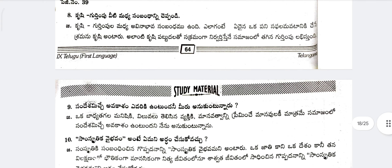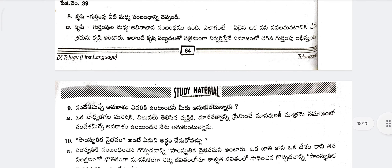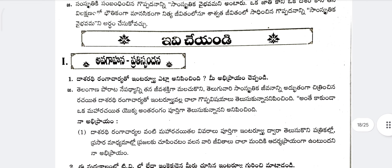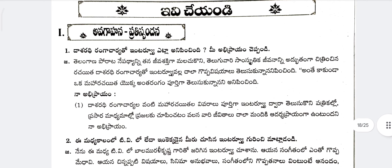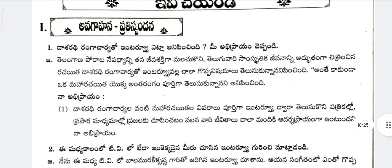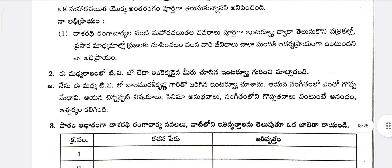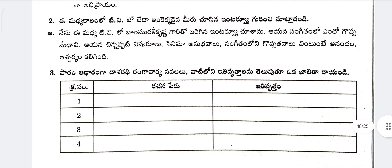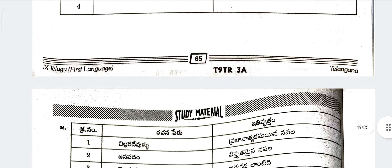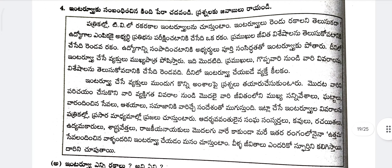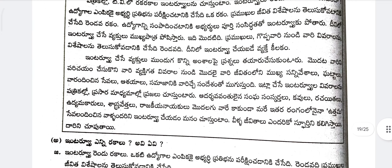This is page number 39 and the question and answer are here. After that, our question answer is starting from here. Let's see them one by one. Question number one answer is starting from here, the second question and answer follows, and this is the third question and its answer. This is the fourth question and its answer.